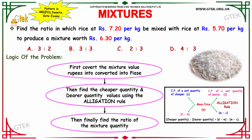Let us see the logic to solve this. First, we have to convert the mixture value Rs.6.30 into paise. Then, we have to find the cheaper quantity and dearer quantity values using the allegation rule. Then, finally, we have to find the ratio of the mixture quantity.